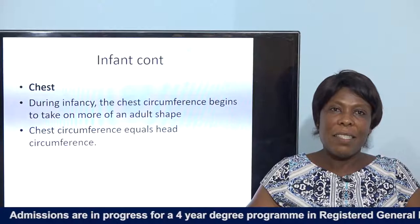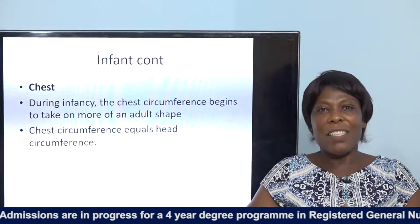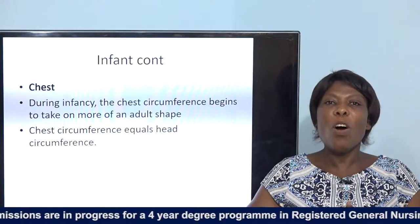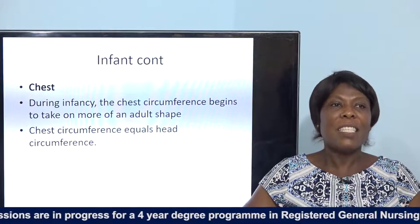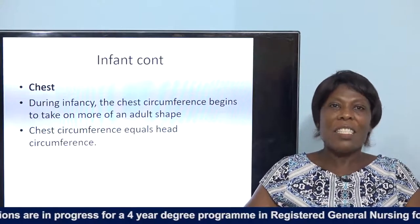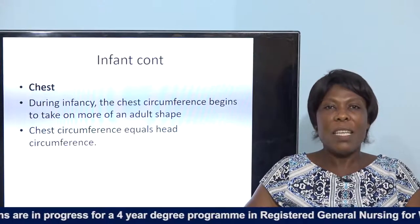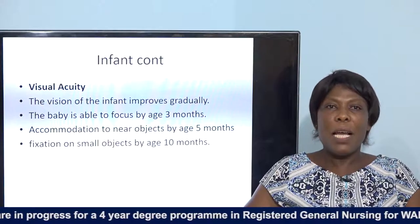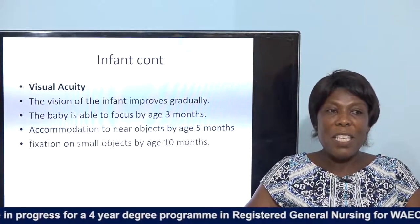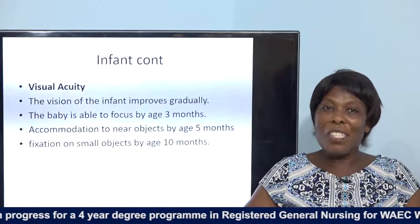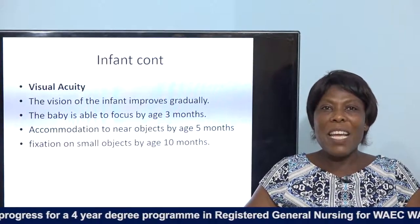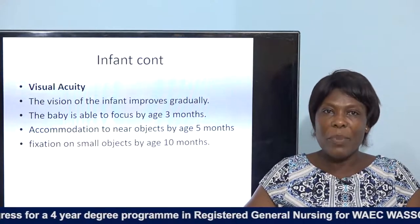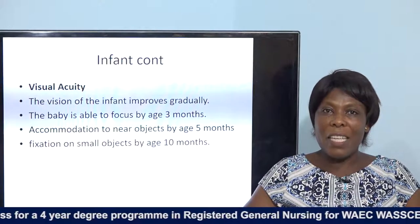Looking at the infant chest, during this time the circumference of the chest begins to take more of an adult shape — the chest circumference now equals the head circumference. For visual acuity, at birth the child cannot see well, but as the child grows the sight improves gradually. The baby is able to focus by age three months.